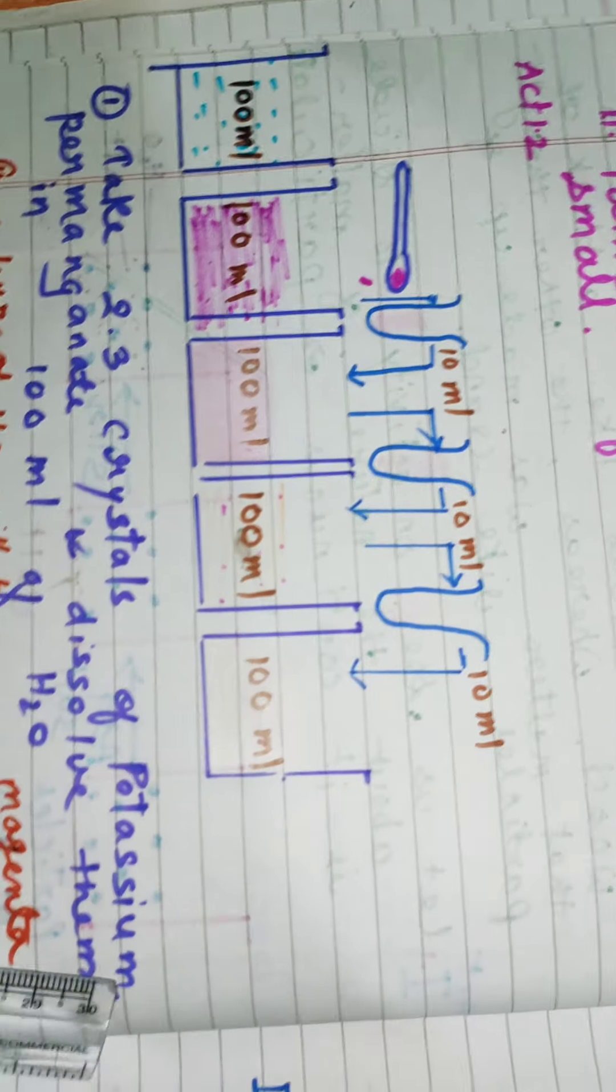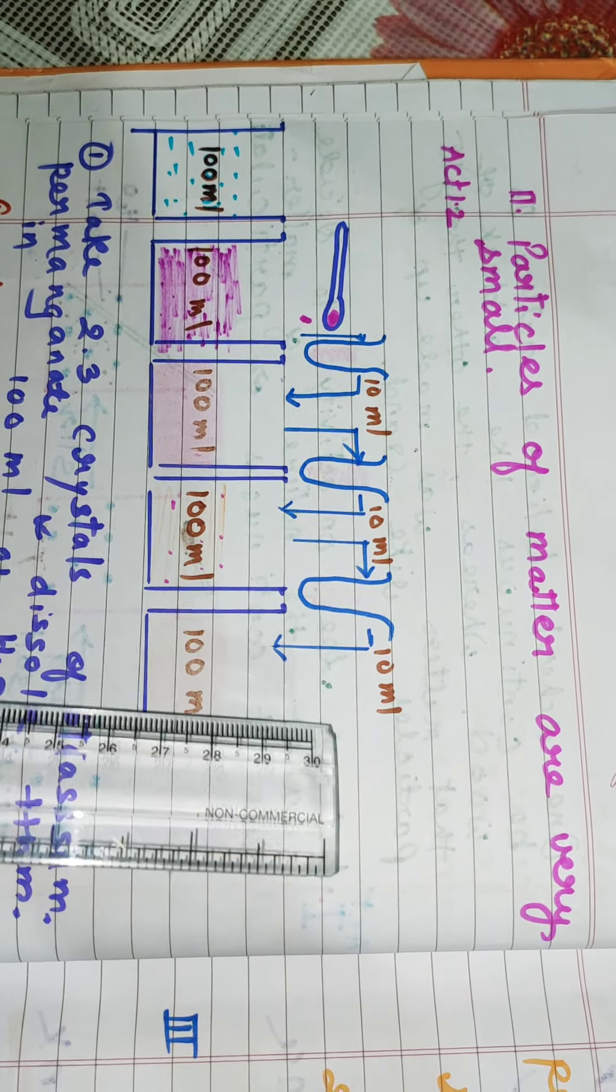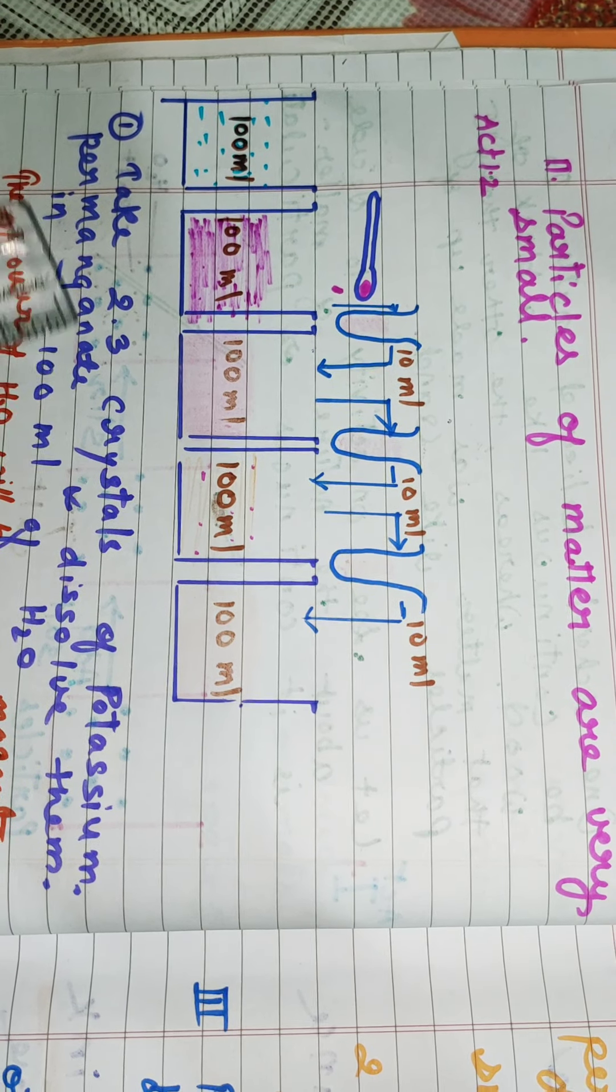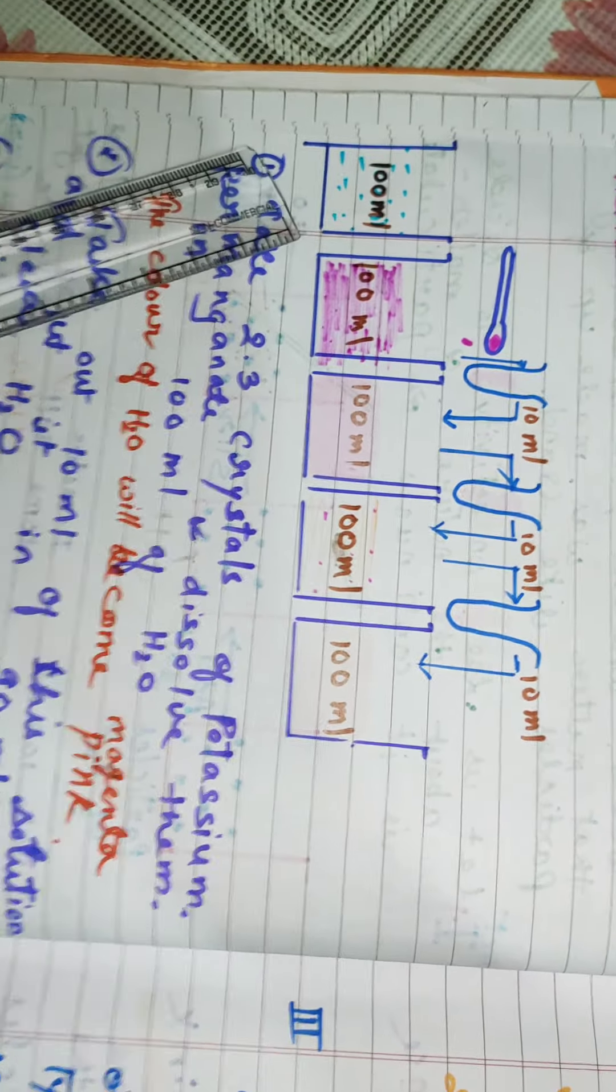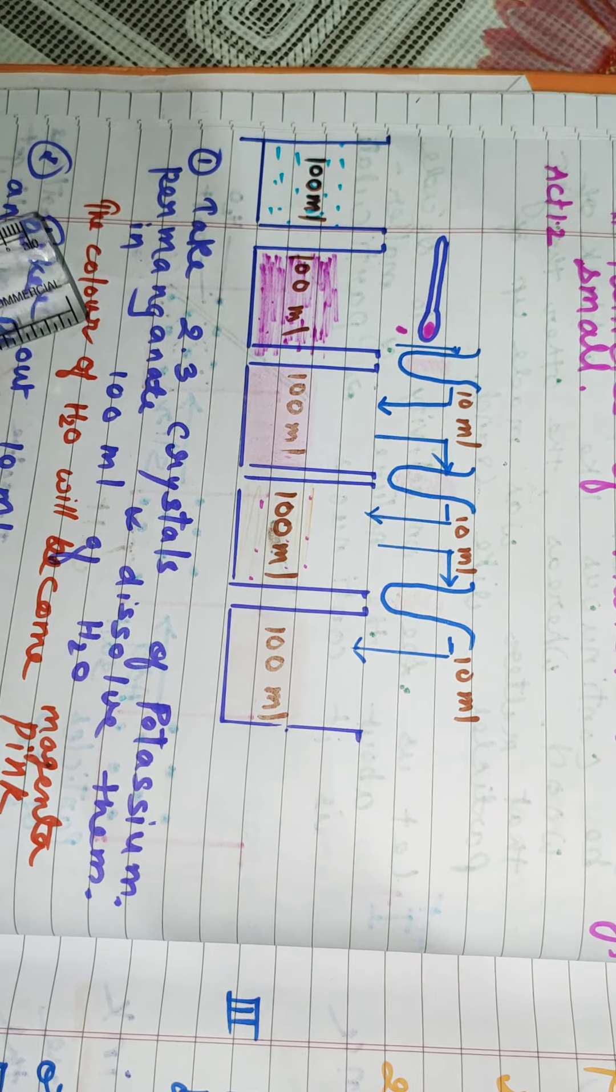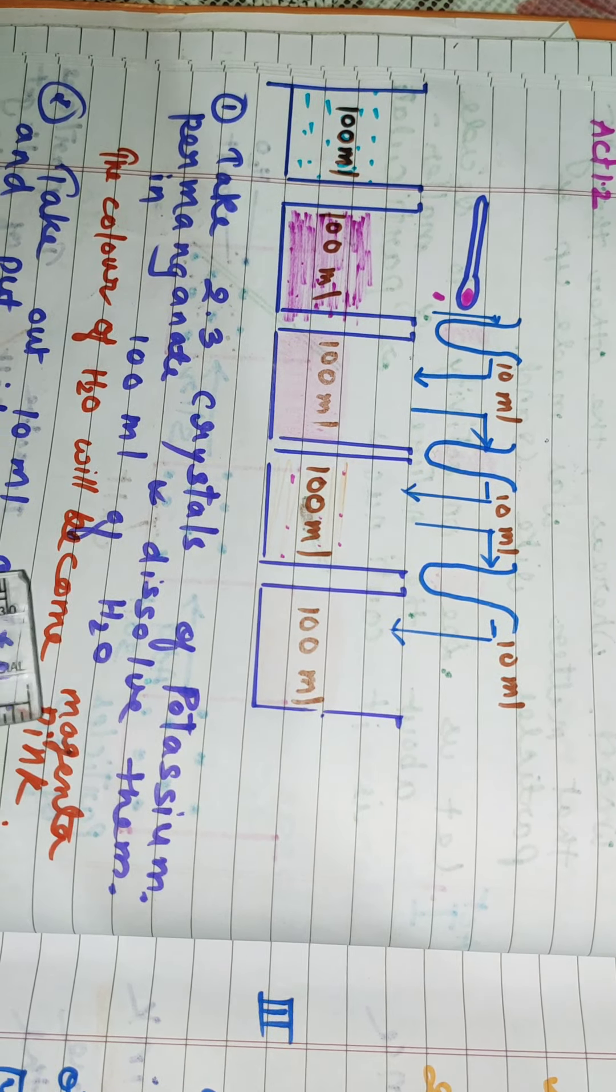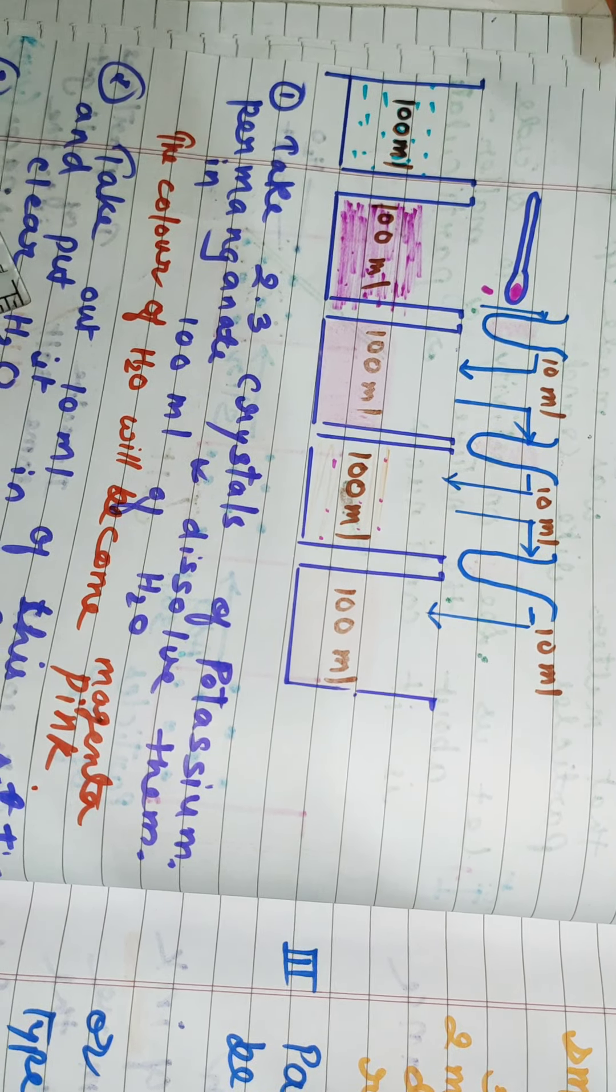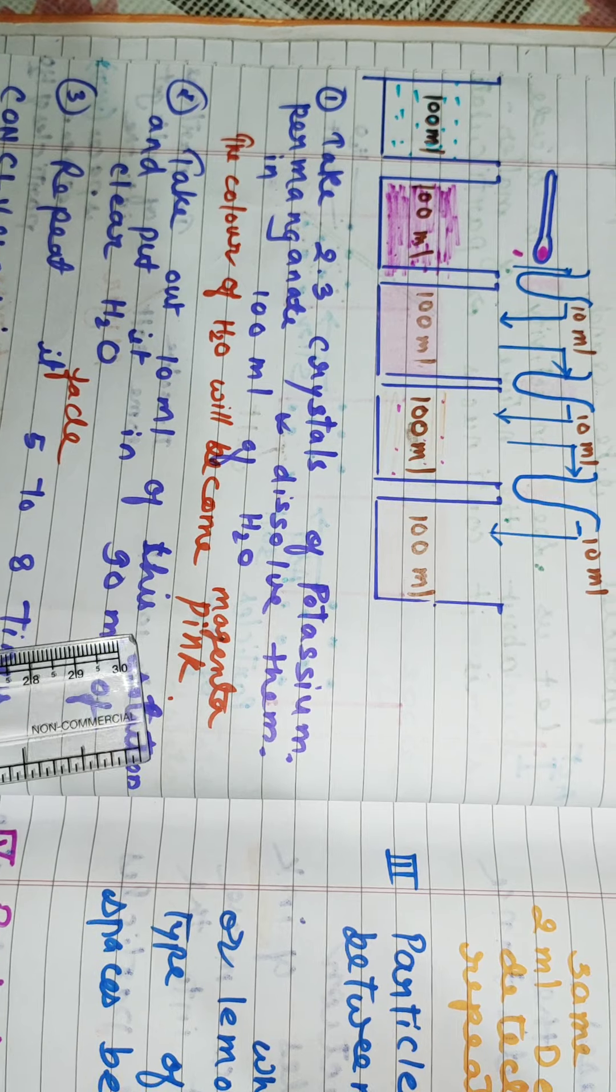We are going to see activity 1.2 of your NCERT textbook that particles of matter are very small. In this activity, you have to take a beaker containing 100 ml of water. After that, you have to add 2-3 crystals of potassium permanganate and dissolve them in 100 ml of water. When you dissolve, you will observe that the color of water will become magenta pink, that is dark pink.